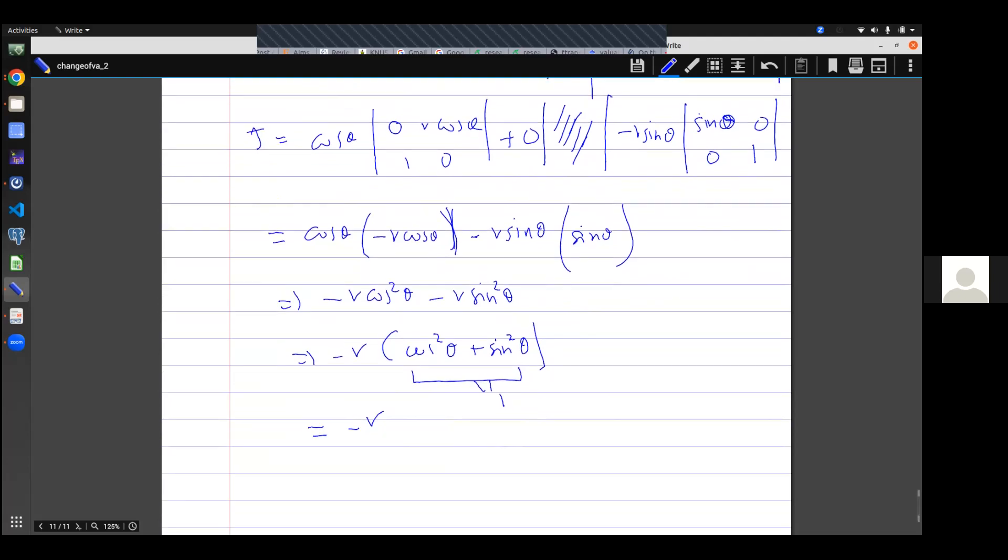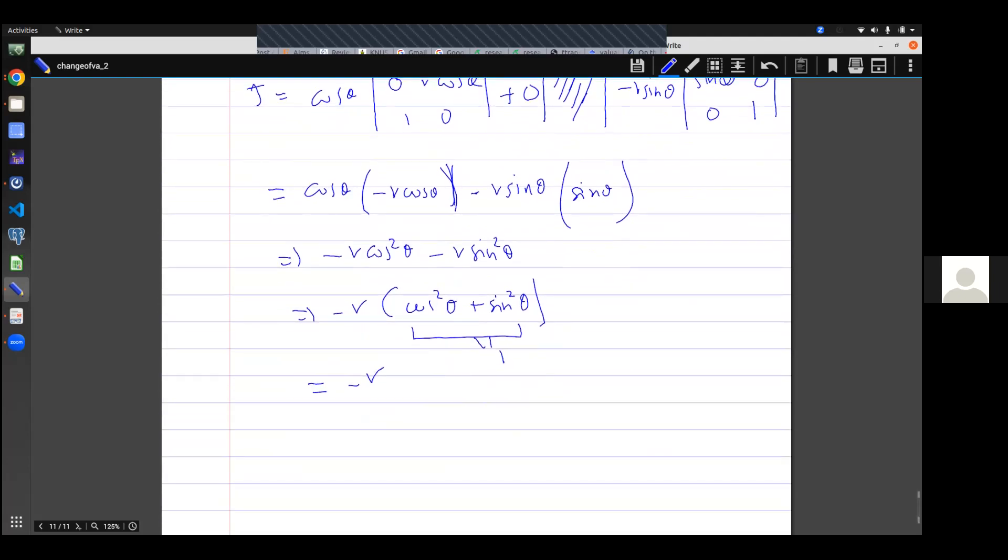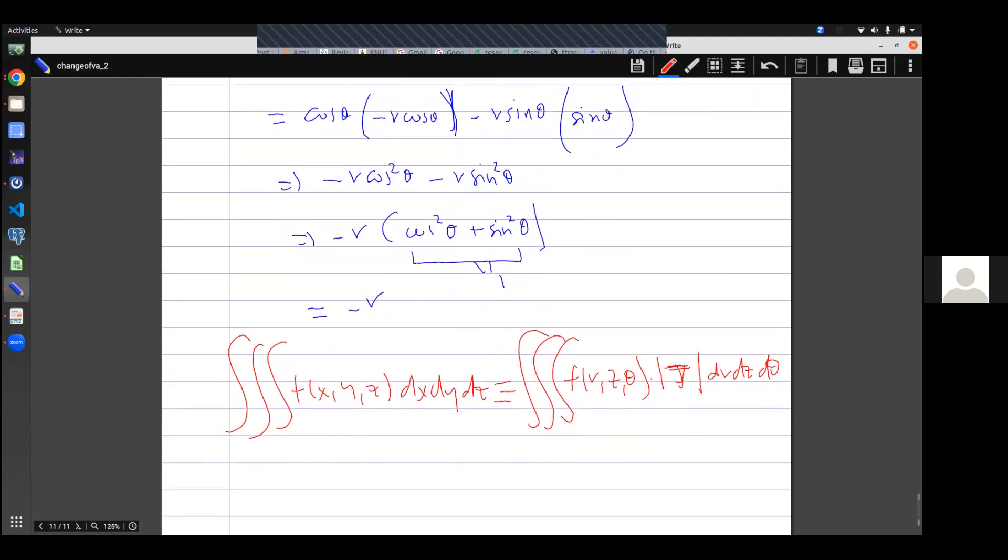Having done this, we can do our substitution. And so I use a different marker here, which says that if I'm moving from the Cartesian of x, y, z, dx dy dz, it is equivalent to the absolute value of Jacobian, dr dz dθ.